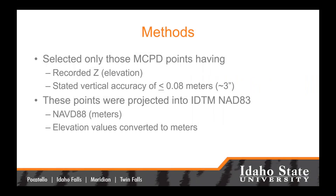Let me walk through the methods I've used to assess the accuracy of LIDAR and our surface data available here in Idaho. Using the MCPD, I selected only those points having a measured elevation value — a recorded Z — and a stated vertical accuracy of 0.08 meters, roughly eight centimeters, about three inches. Those points were then projected into Idaho Transverse Mercator, NAD 83, using the NAVD 88 meters vertical datum. Many of you recognize this is the state standard in Idaho for both horizontal and vertical. Elevation values were also converted into meters if they were not already.